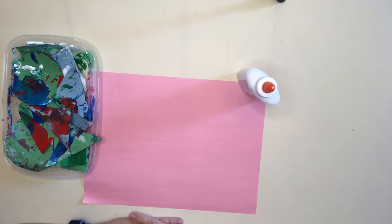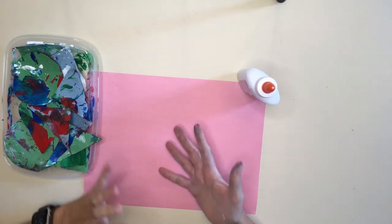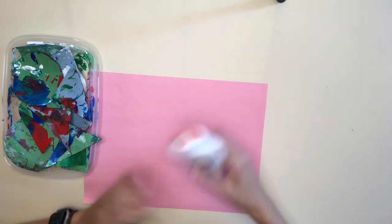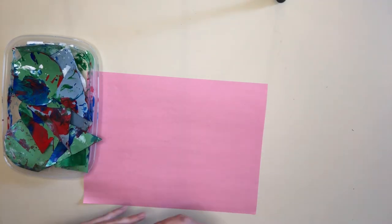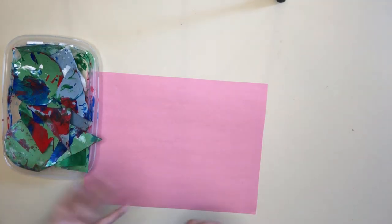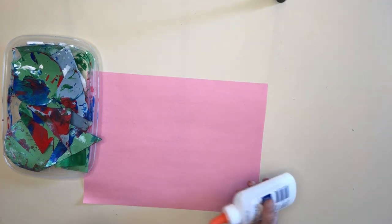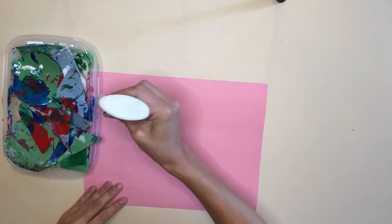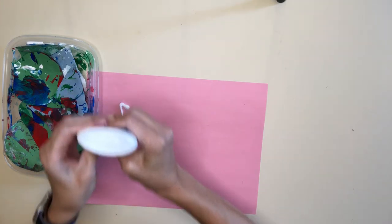Now that all my pieces are dry, it's time to make a beautiful picture. Now you can do this however you would like—you can make a beautiful design, you could just put them anywhere you would like, whatever works best for you. For me, I'm just going to put glue all over my paper and then I'm going to add the pieces to my paper.